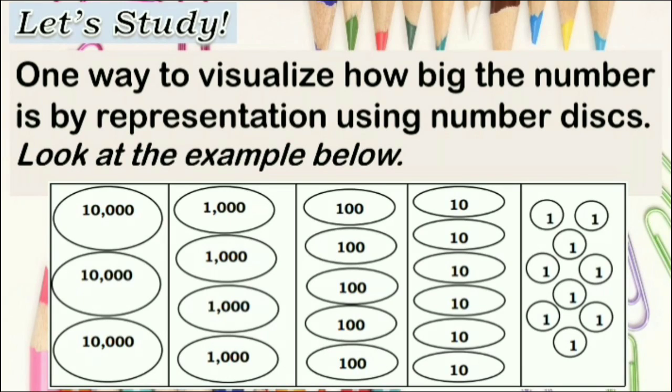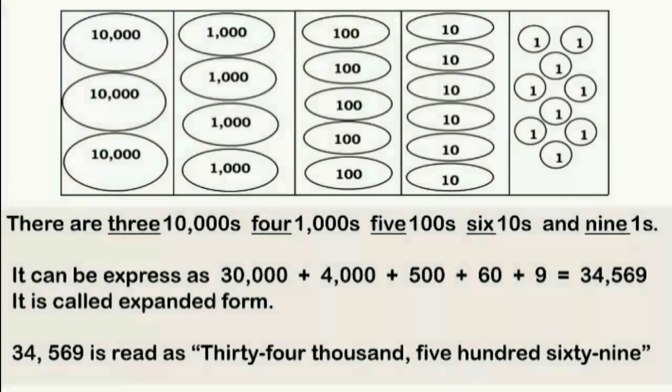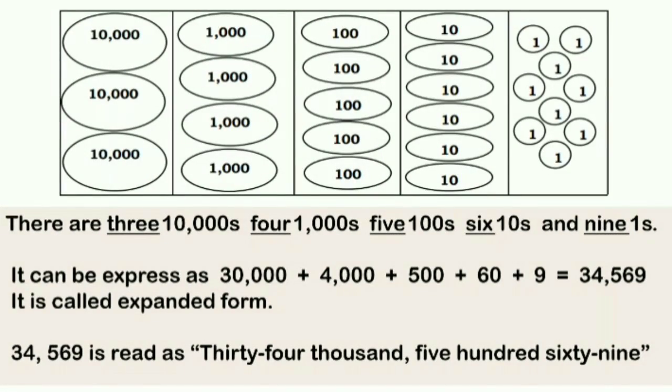Now let us study how to visualize numbers. One way to visualize how big the number is by representation using number discs. Look at the example here. What have you noticed? As you can see, there are 3 ten thousands, 4 thousands, 5 hundreds, 6 tens, and 9 ones. It can also be expressed as 30,000 plus 4,000 plus 500 plus 60 plus 9. It is called expanded form. And if you sum it up, the total is 34,569. We can read and write this number in symbols as 34,569 in words.